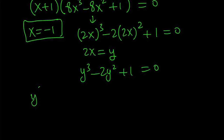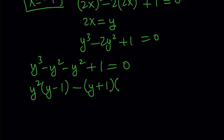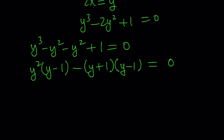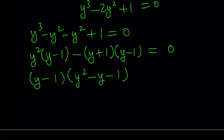Let's factor it by breaking down the negative 2y squared. We can factor out y squared, and then minus — this is a difference of two squares — giving us (y+1)(y-1). So I factored y squared minus 1 into those. Now y minus 1 is a common factor, and that gives us y squared minus the quantity (y+1), which becomes y squared minus y minus 1 equals 0.